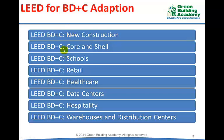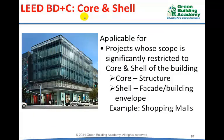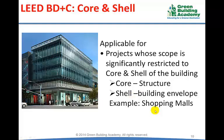The eight BD+C adaptations are: New Construction, Core and Shell, Schools, Retail, Healthcare, Data Centers, Hospitality, and Warehouses and Distribution Centers. LEED for BD+C Core and Shell is applicable for projects where the scope is restricted to the core and shell of the building — core refers to the structure and shell refers to the building envelope. Interior fit-out is done by tenants. Shopping malls are good examples, where the owner's scope is limited to structure, building envelope, and common areas.